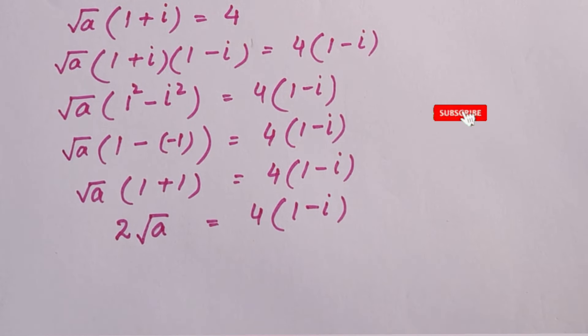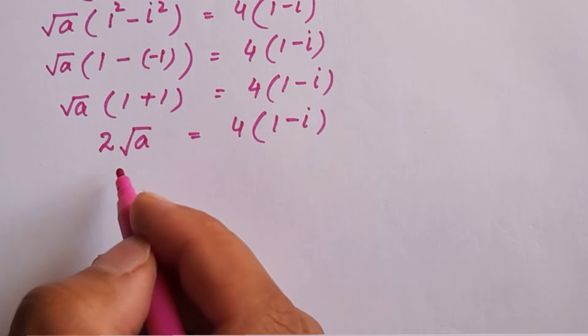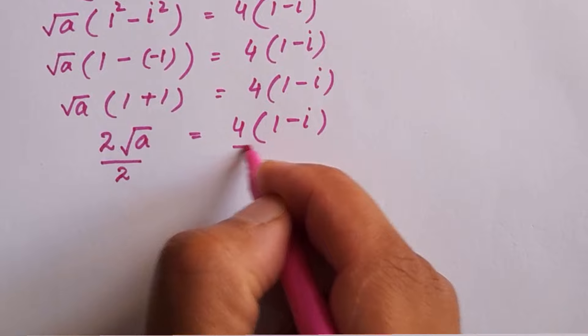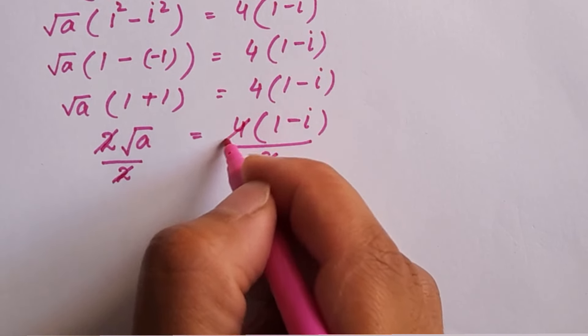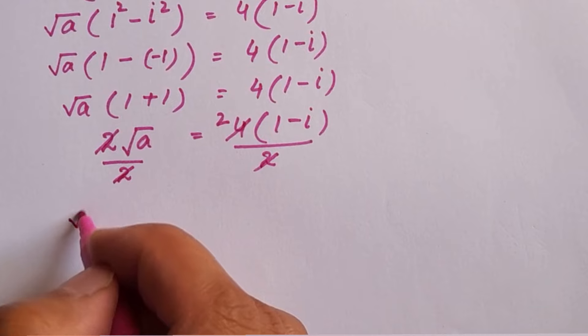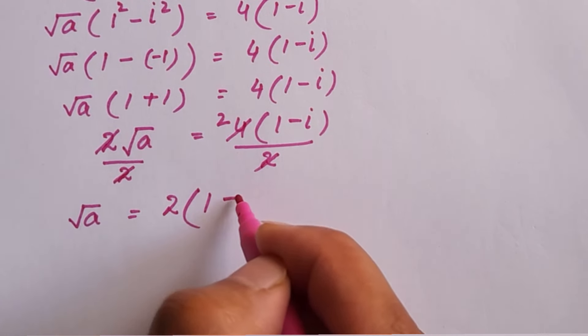Here we are going to divide both sides by 2. So here divide by 2 and here divide by 2. 2 and 2 cancel out, 2 times 4 is 2. Root a is equal to 2 times 1 minus iota.